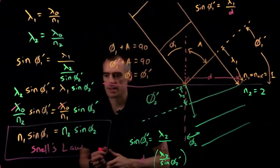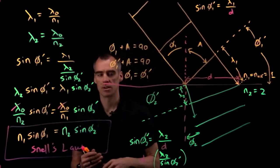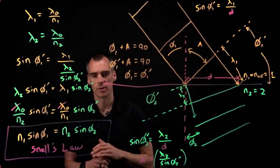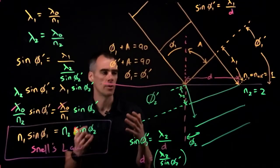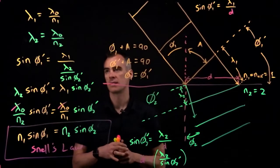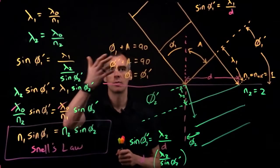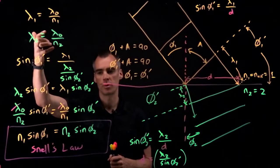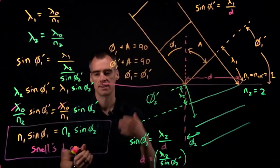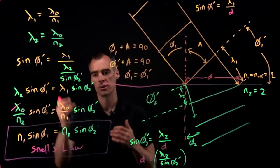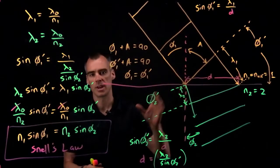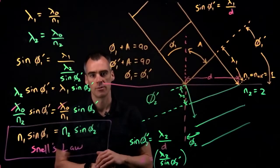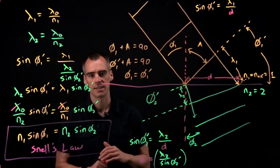So that is how you derive Snell's law. All we needed to know was that wavelengths change inversely proportionally to the index of refraction because the speed slows down, plus a little bit of geometry. Hopefully that was helpful — until next time, take care.